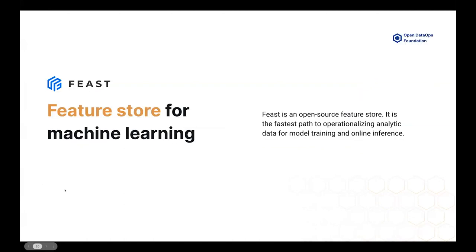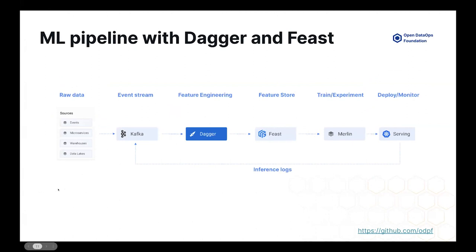Feast is the feature store that allows your models to pull features for streaming as well as for serving. In the ML pipeline with Dagger and Feast: raw data is ingested into event streams like Kafka, then Dagger takes data from Kafka, aggregates it, does the feature transformation, and syncs those features into the feature store. Merlin is our internal tool that allows you to train, experiment, and deploy models — your final stage is model serving. From model serving you produce inference logs that go back to Kafka, which can be used for monitoring, auditing, and other purposes.